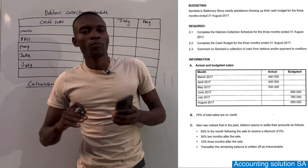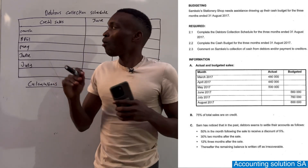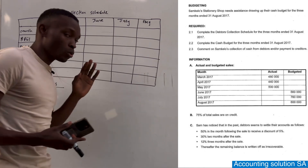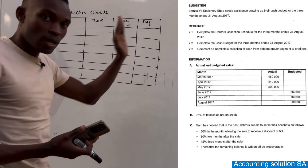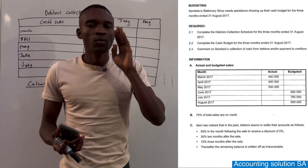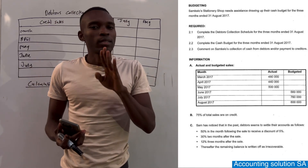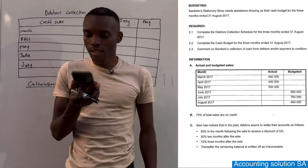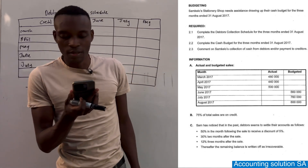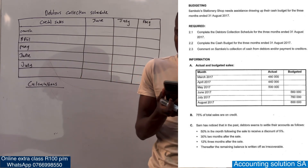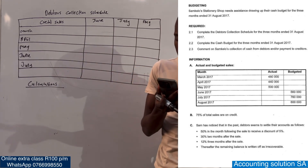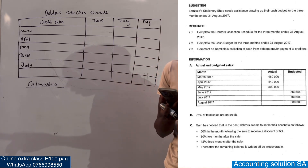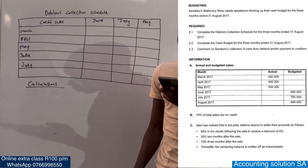Hi Grade 11 students! In this video we are going to do Part 3 of the debtors collection schedule. I want us to start from scratch so that you will know how we calculate these balances one by one. Make sure you stay tuned and watch until the end. Let's look at this question paper — a stationery shop needs to hire assistants, drawing up their cash budget for three months ended 31 August 2017. Question 2.1: complete the debtors collection schedule for three months ending 31 August 2017.